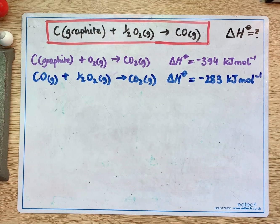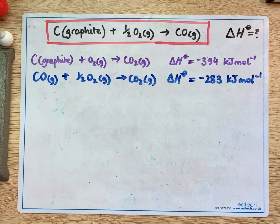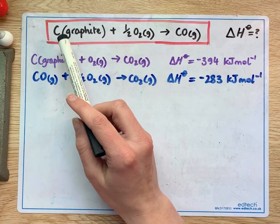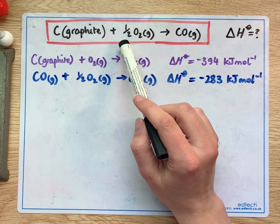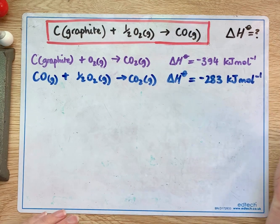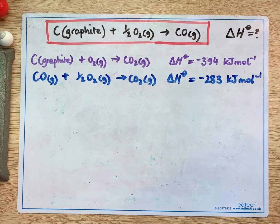Here's an example of a question that uses Hess's law. We're looking here for carbon in the form of graphite plus some oxygen gas to give us carbon monoxide gas and we don't know the enthalpy change for this reaction.